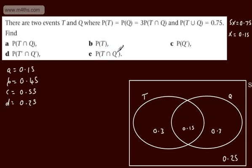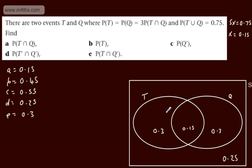Finally, P(T∩Q') — the T-only region — is 0.3. We've dodged using the addition formula but found all values anyway. The take-home message is: with the addition formula, you can use it, but have a range of techniques. Reducing to a Venn diagram and identifying regions is always a good option for solving probability problems.